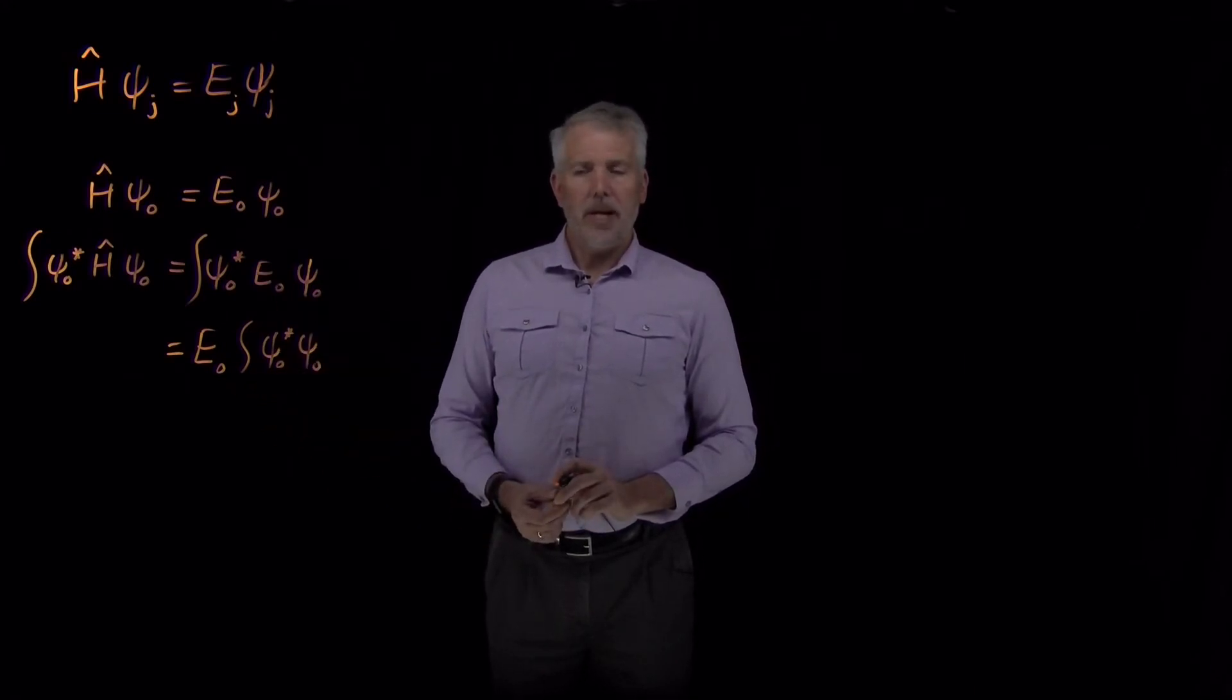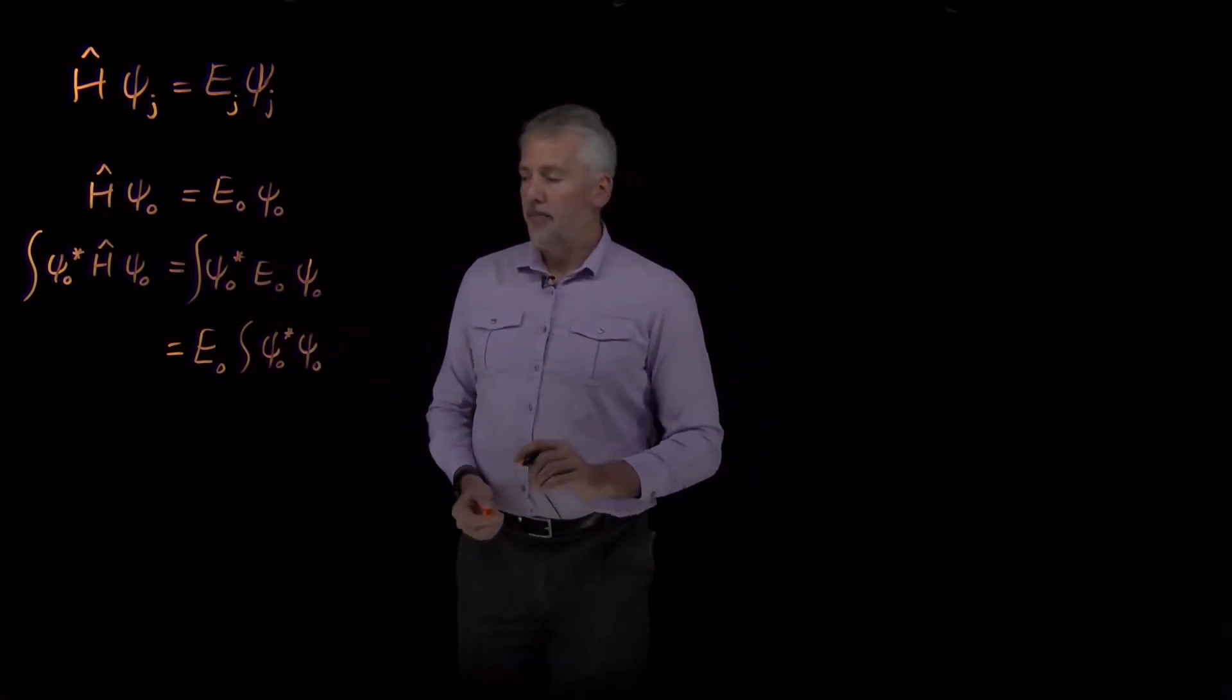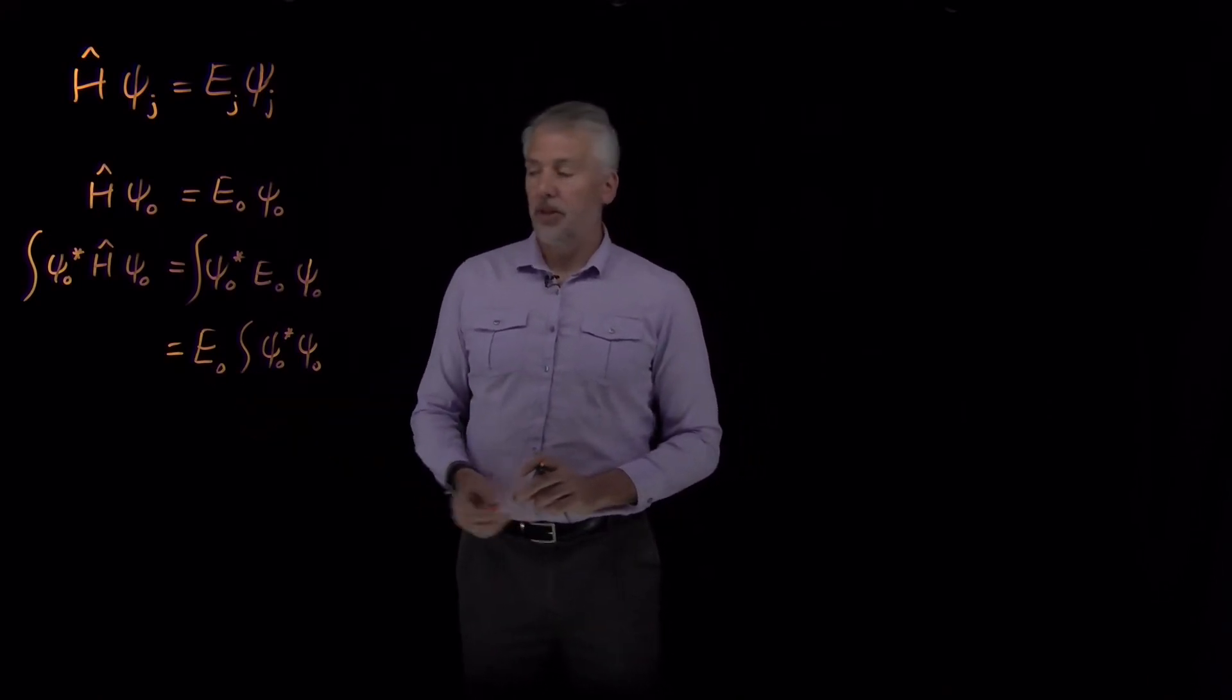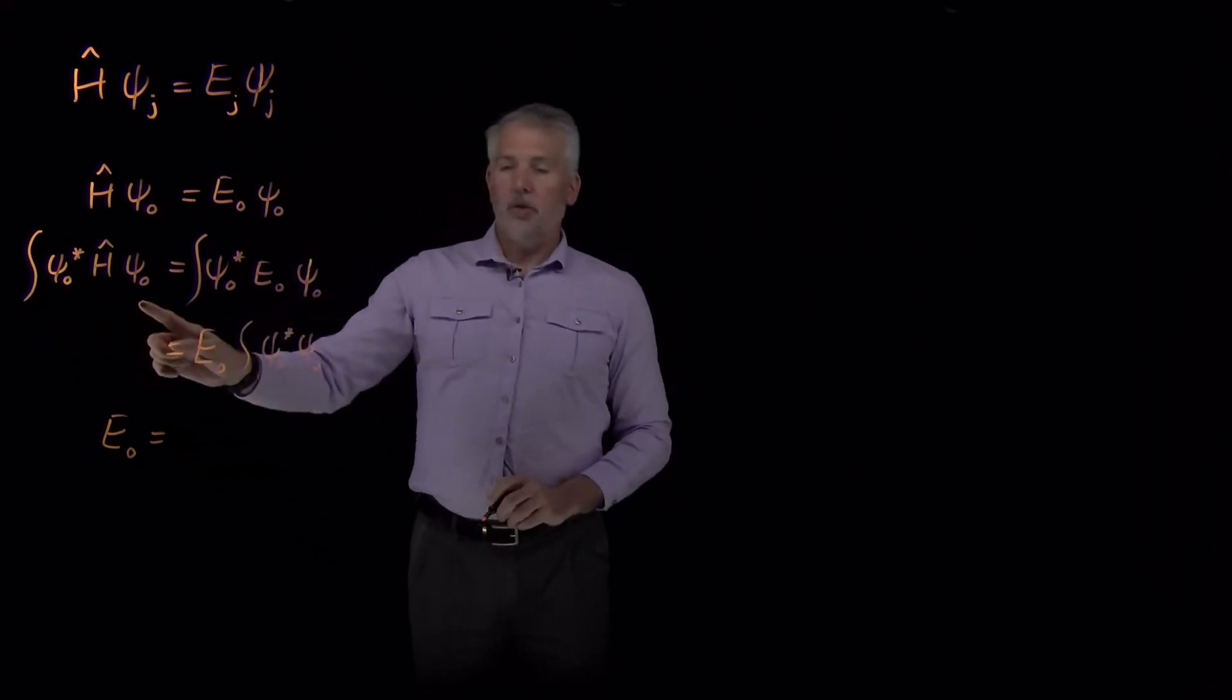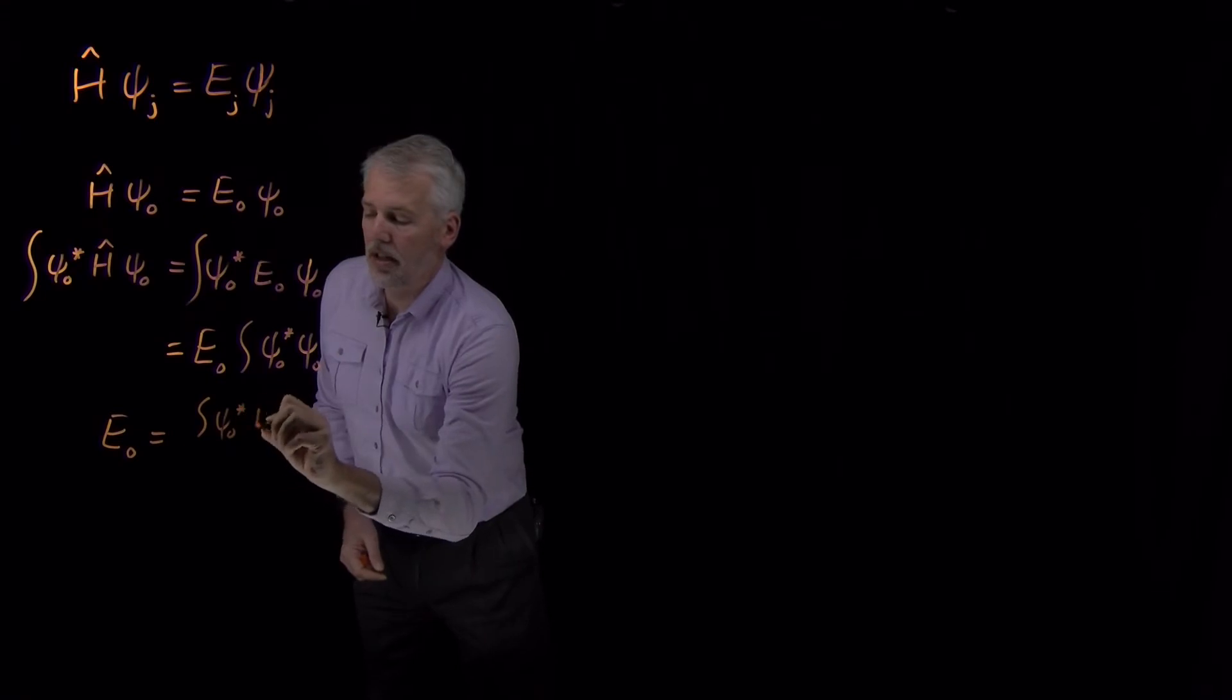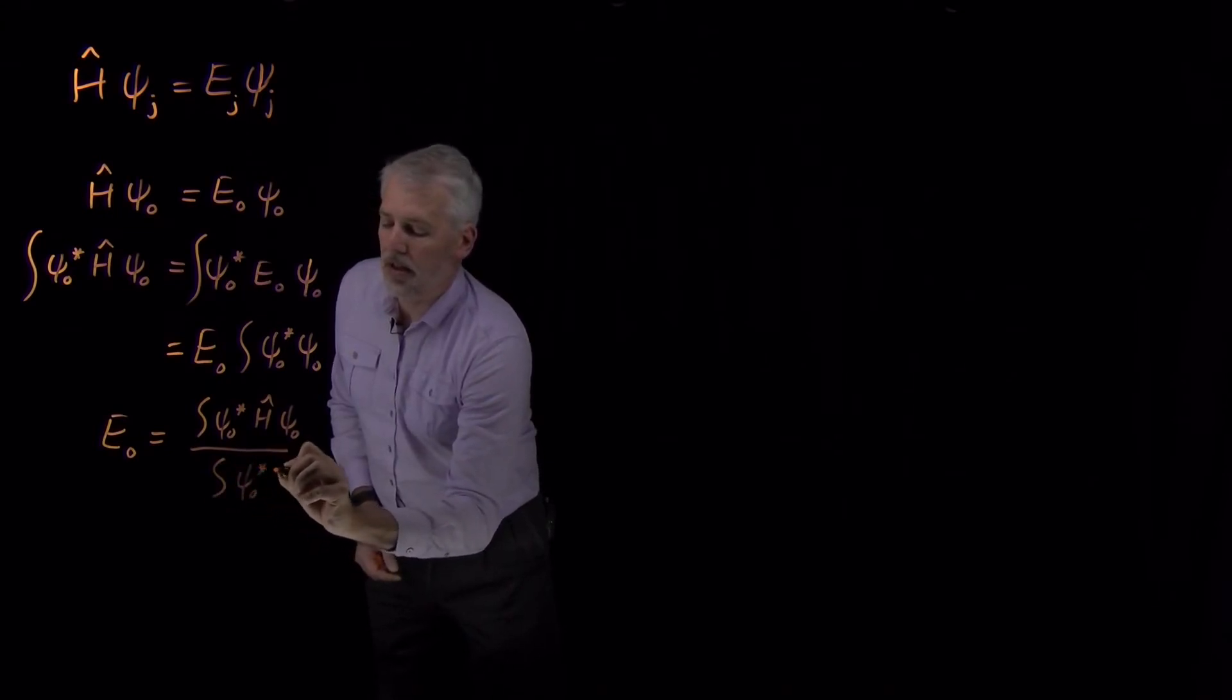In general, we may have functions, either wave functions or non-wave functions that are not normalized. So I'm going to leave this written this way. If we happen to know that our wave functions are normalized, then this simplifies and becomes 1. But if what we're interested in is knowing the energy, even if we can't solve the wave function, I can rearrange this expression to say that the energy E₀ is equal to the integral on the left-hand side, integral of ψ₀* times Ĥ acting on ψ₀, all divided by integral of ψ₀* times ψ₀.